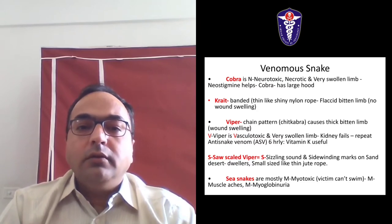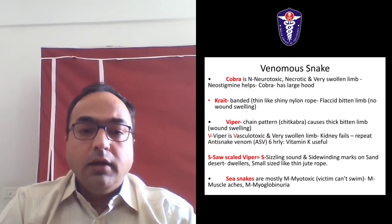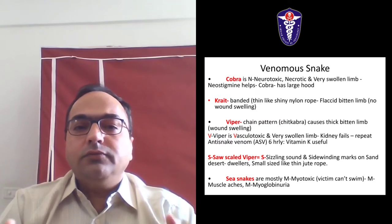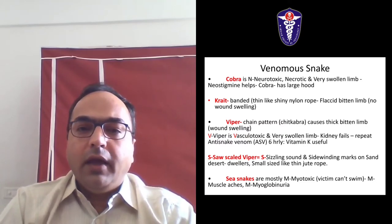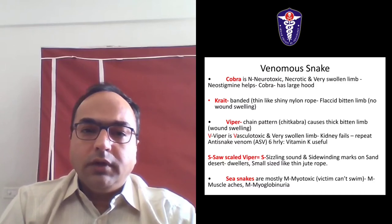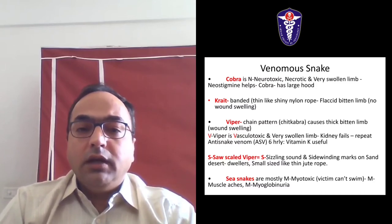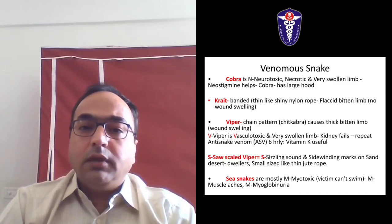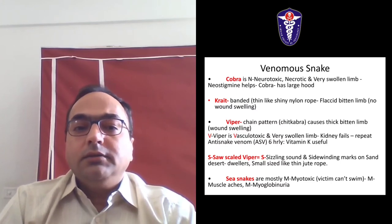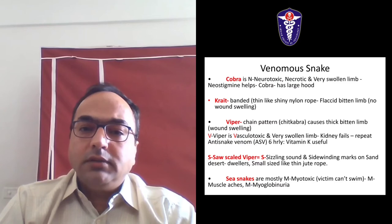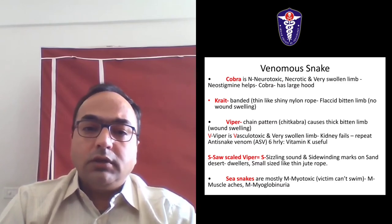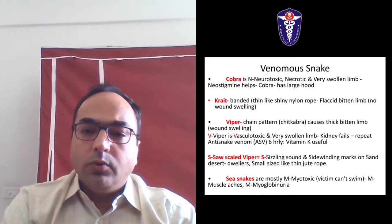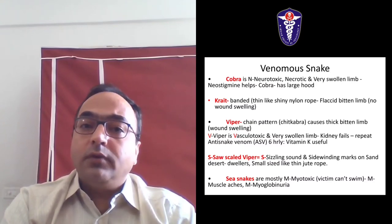These are a few things we need to understand while identifying and treating snake bites. The saw-scale viper makes a sizzling sound and leaves sidewinding marks on the sand - it lives in the desert and is small-sized. Then the sea snake is myotoxic, causes muscle aches and myoglobinuria, and the victim cannot swim.